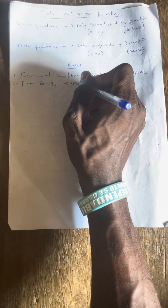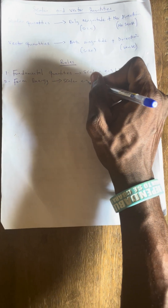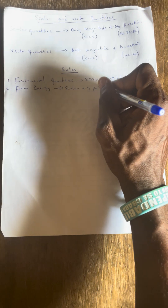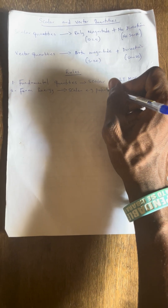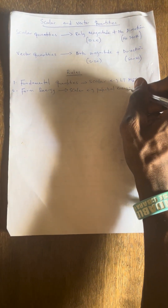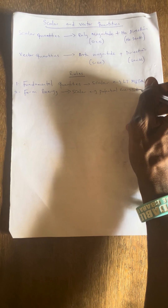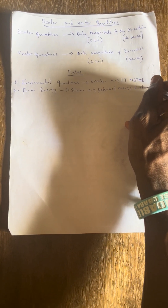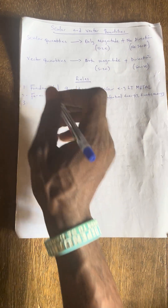Rule number two: any form of energy is scalar. For example, we have potential energy, kinetic energy, and mechanical energy. Any form of energy — they are all scalar.